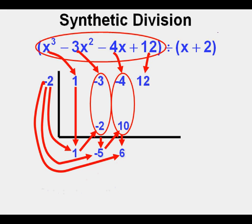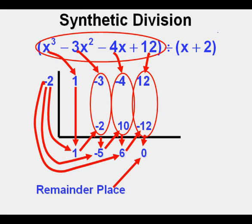Then we take the negative 2 and multiply it by the 6 here. And we place the product of negative 2 and 6, which is negative 12, here. Now we take the sum of 12 and negative 12, which is 0, and place it here below in the remainder place.